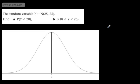This is our third video looking at converting to a standard normal distribution. In this question, we're told the random variable Y follows a normal distribution with mean 25 and variance 25. In part A, we're asked to find the probability that Y is less than 20, and in part B, we're asked to find the probability that Y is between 18 and 26.